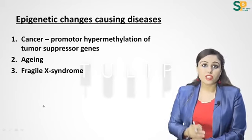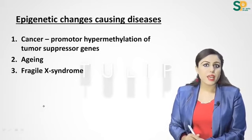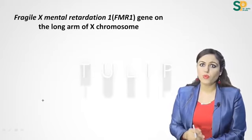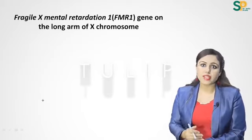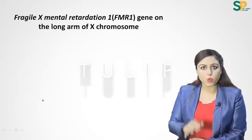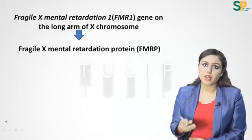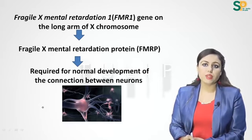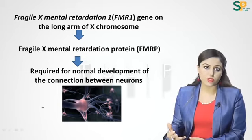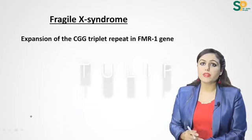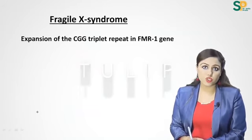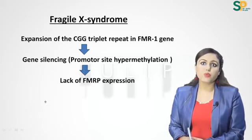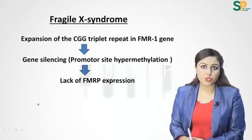Epigenetic changes also have a role in aging. A third disease is Fragile X syndrome. There is a gene on the long arm of the X chromosome called FMR1 (Fragile X Mental Retardation gene), which is transcribed and translated to form FMRP protein. FMRP has a role in normal development of neuronal connections. In Fragile X syndrome, expansion of CGG triplet repeats in this gene leads to gene silencing due to promoter site hypermethylation, so FMRP protein is not produced, causing mental retardation.